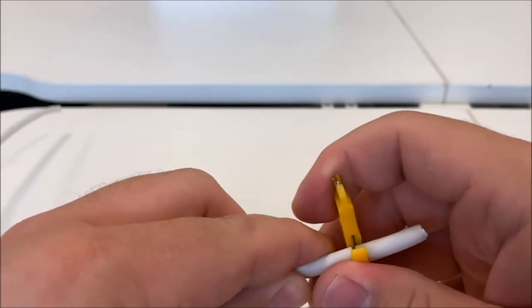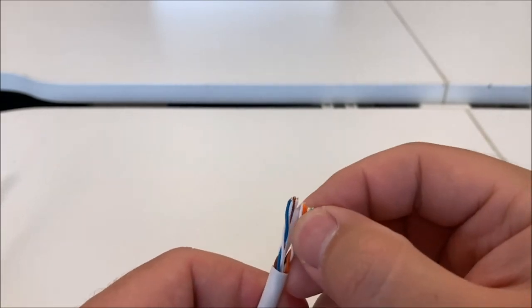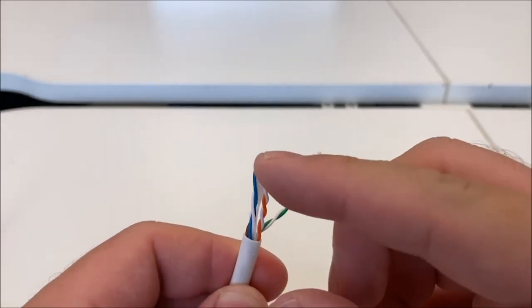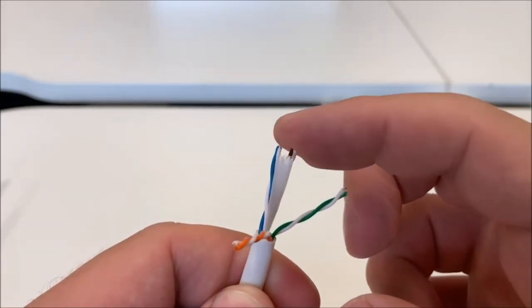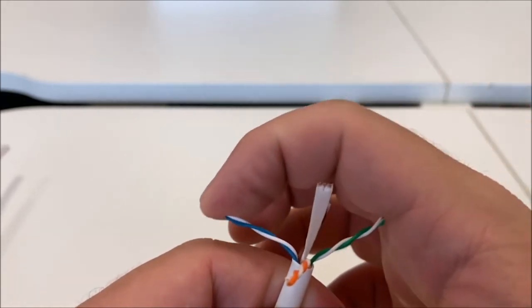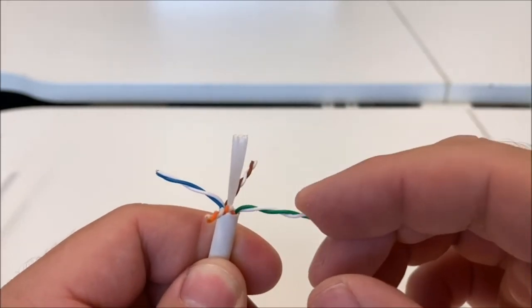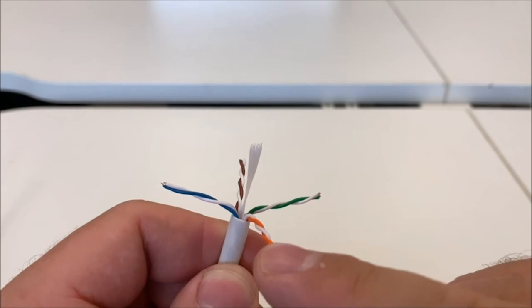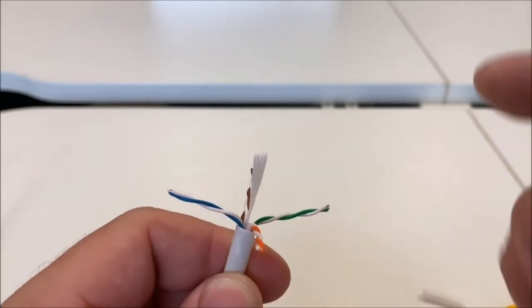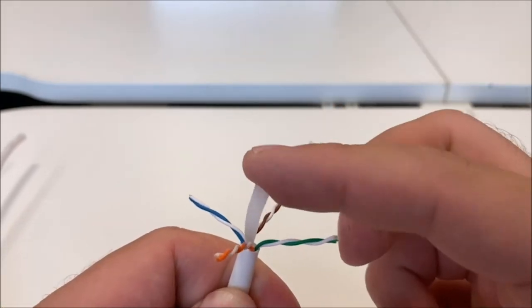Now these type of cables are called twisted pairs because, as you can see, all the cables are in a twisted color-coded pair. So you've got a green and green-and-white, orange and orange-and-white, blue and blue-and-white, and brown and brown-and-white.